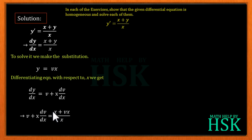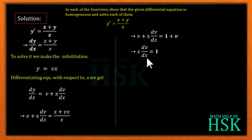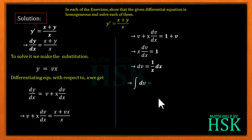We take x as common and on solving, we get 1 + v on the right side. The v terms cancel, giving us x·dv/dx = 1, or dv = (1/x)dx. Now integrating both sides, we get the integral of dv equal to the integral of (1/x)dx.